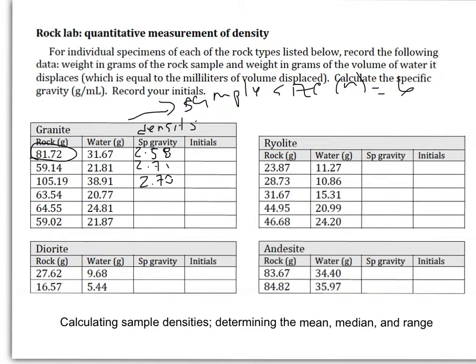Now we have essentially two significant figures on the measurements of the density, the mass and the volume. So when you divide these out, you would get two point seven zero three, blah, blah, blah. You really should only take that to two significant figures. Sixty-three point five four divided by twenty point seven seven. Three point zero six rounded up. Maybe one more. Sixty-four point five five divided by twenty-four point eight one. Two point six zero. And you could do the sixth one as well.